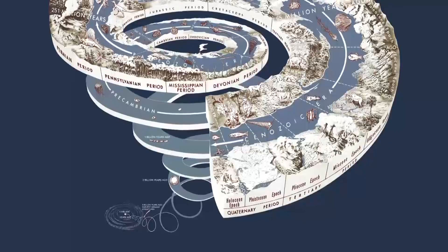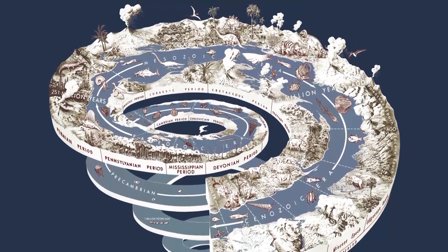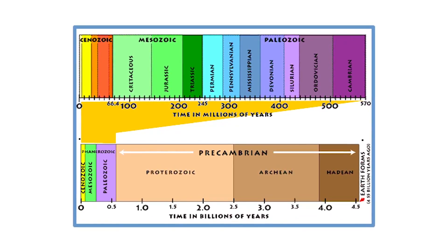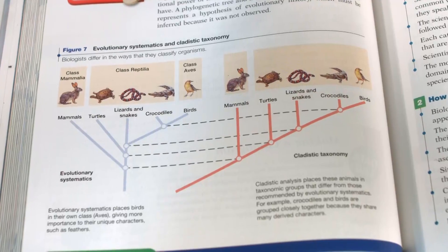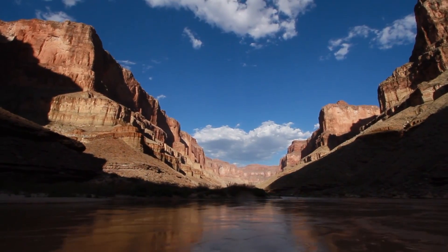It seems that the foundation of evolutionary theory sure depends on radiometric dating. Radiometric dating is used to support the belief that millions of years exist for evolution to happen. The entire age of the Earth rests upon radiometric dating. It seems they're putting a lot of faith in something they can't actually test through direct observation. After all, plenty of assumptions go into these calculations. If it were to be disproved, their whole worldview would seem to collapse. Without billions of years, you can't have biological evolution or geological evolution on Earth.